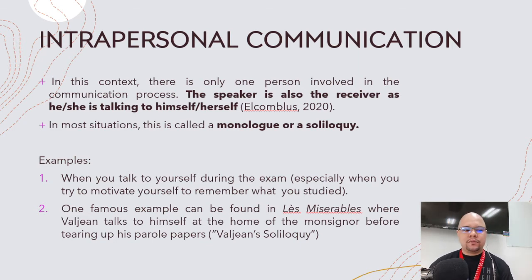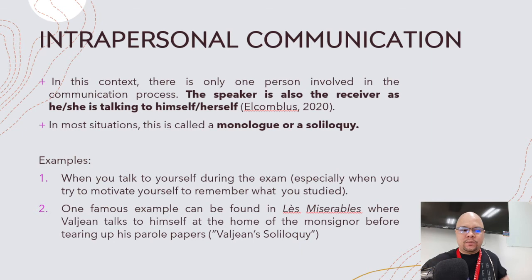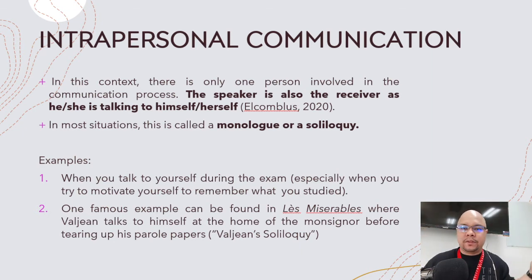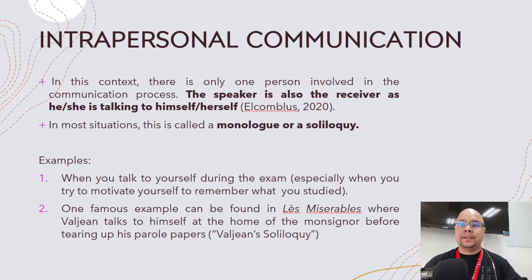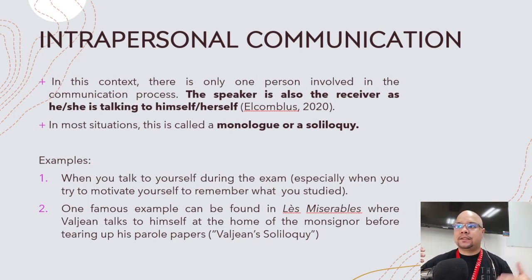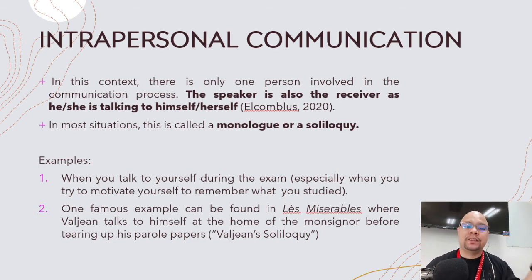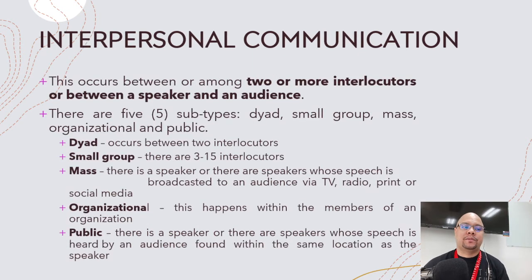In literature, we also have Valjean's soliloquy in Les Misérables — the scene where he rips up the document for his parole. That is an example of a soliloquy, when he asks 'Who am I?' and at the end says 'My name is Jean Valjean.' That is a soliloquy, and that is also an example of intrapersonal communication.